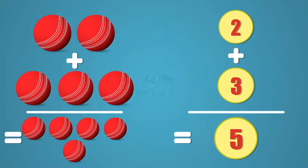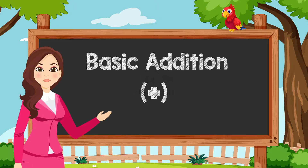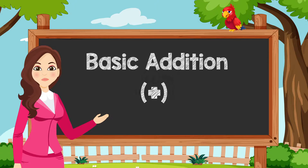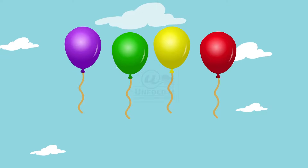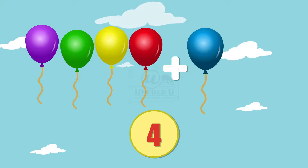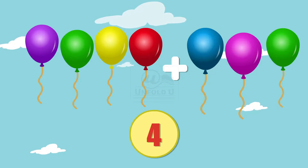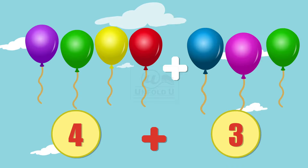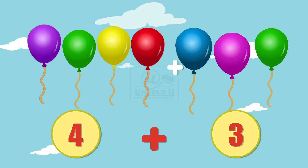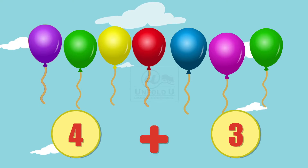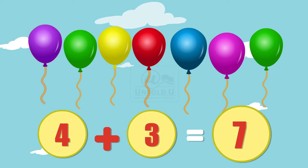You all are really excited to do more addition! Let's do one more. One, two, three, four — here we have four balloons, plus one, two, three — plus three balloons. Now we have to find the total number of balloons. Let's count: one, two, three, four, five, six, and seven. Totally we have seven balloons. Four plus three gives seven. Bye bye kids!